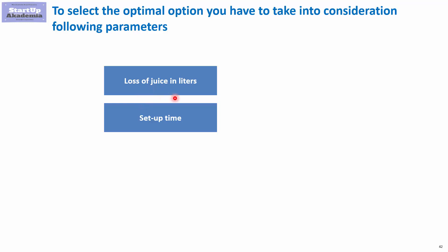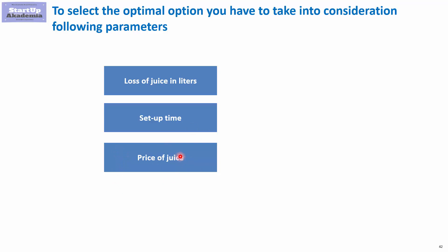Apart from not losing any juice in the production line, we also don't have to perform a setup between apple juice and orange juice, or between orange juice and blueberry juice. This means we avoid cleaning the whole production line and reconfiguring the flow of the product. With the optimal sequence of batches, we save on setup time as well. We also have to take into account the price of juice, since the monetary loss equals the liters of juice lost multiplied by the price per liter.